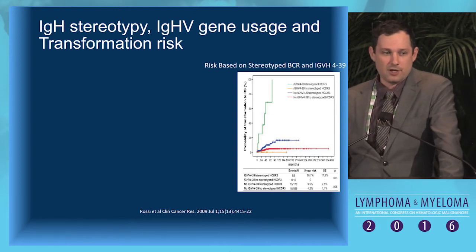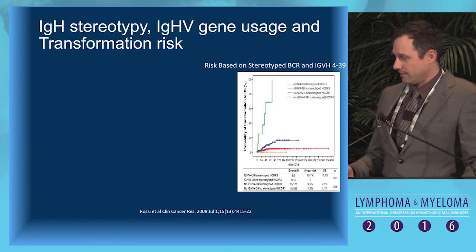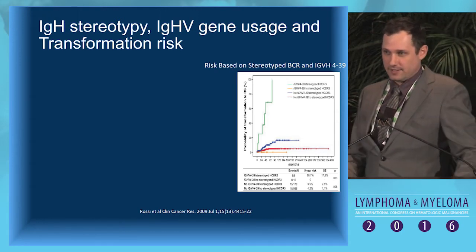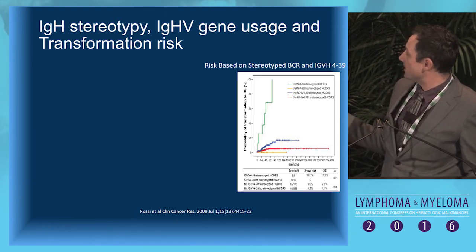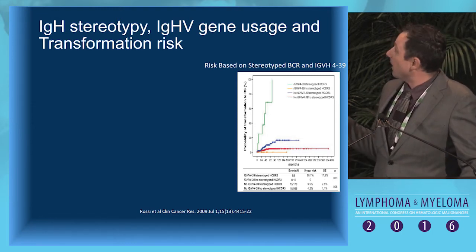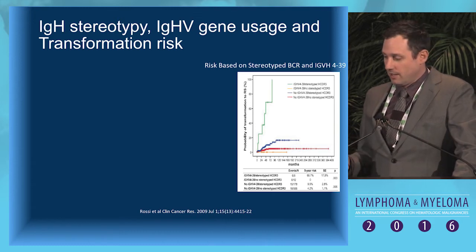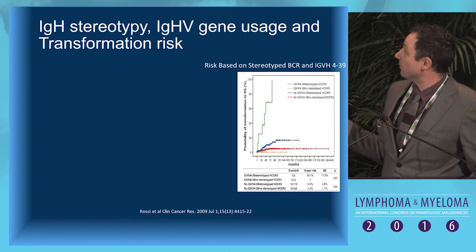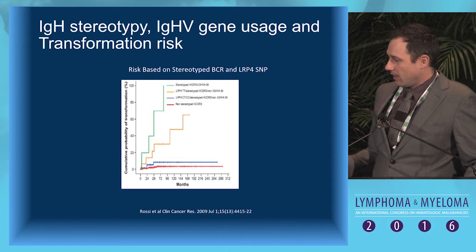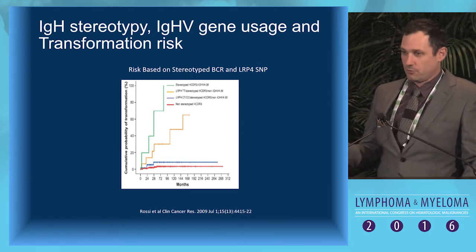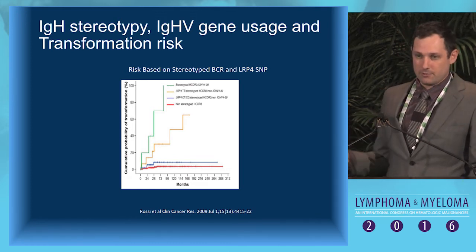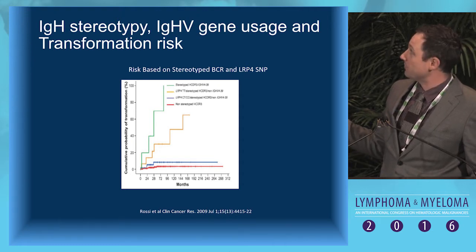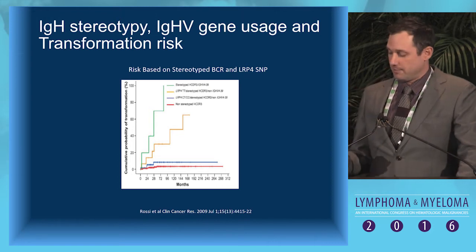When you combine with high-risk V genes such as V4-31, particularly stereotype subset 8 V4-39, the risk at five years pushes up to about 80%. While these are rare patients, there's a potential to intervene on them, and the question is whether novel therapies with early treatment could avoid transformation. Similarly, combining stereotype B-cell receptors with the LRP4 polymorphism shows a very similar story to V4-39, and we're getting better at potentially identifying very high-risk patients.